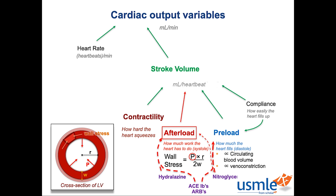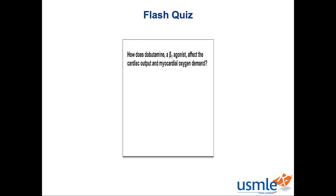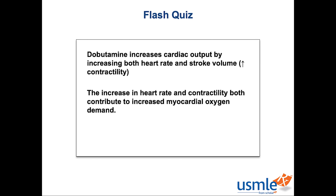Time to test what you know with a flash quiz. Your question is: how does dobutamine, a beta-1 agonist, affect cardiac output and myocardial oxygen demand? Make sure you explain how, not just whether it increases or decreases. The answer is that dobutamine increases cardiac output — cardiac output is defined as heart rate times stroke volume, and beta-1 agonists increase both heart rate and stroke volume by way of increased contractility. Both increased heart rate and increased contractility do contribute to increased myocardial oxygen demand.